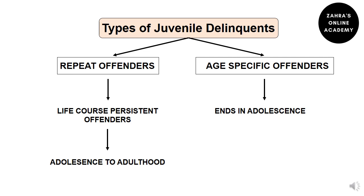The first thing we will discuss is the types of juvenile delinquents. There are two types: the first is repeat offenders, also known as life-course persistent offenders. As the name indicates, these are persistent offenders who begin showing antisocial behavior in childhood and even after entering adulthood they do not stop, continuing to engage in criminal activities.